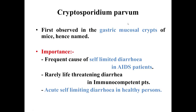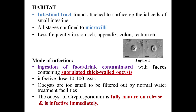Cryptosporidium parvum was first observed in gastric mucosal crypts of mice, hence it was named Cryptosporidium. It is a frequent cause of self-limited diarrhea in AIDS patients and can rarely cause life-threatening diarrhea in immunocompetent patients. Acute self-limiting diarrhea in healthy persons is a common feature. It stays in the intestinal tract, attached to surface epithelial cells of the small intestine, with all stages confined to the microvilli. It can less frequently be found in the stomach, appendix, colon, or rectum.